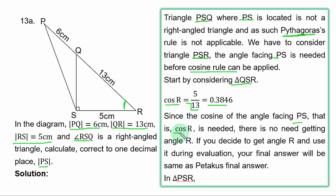What that means is that, if you choose to get angle R, you take the inverse of cosine of this value. But this cos R is in cosine rule.